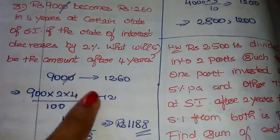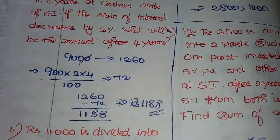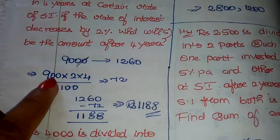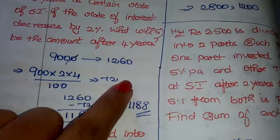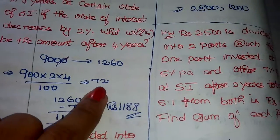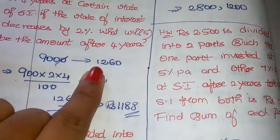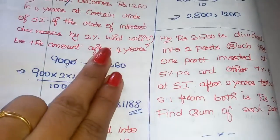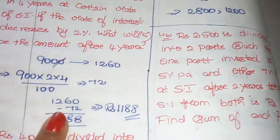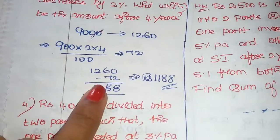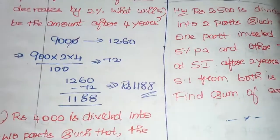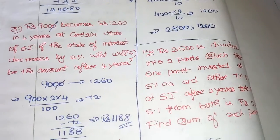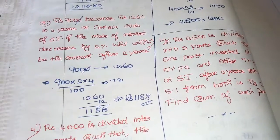For the next problem: ₹1,260 over 4 years — if the rate of interest decreases by 2%, the decrease in SI = 900 × 2 × 4 divided by 100 = ₹72. Final value = 1,260 minus 72 = ₹1,188. The answer is ₹1,188.